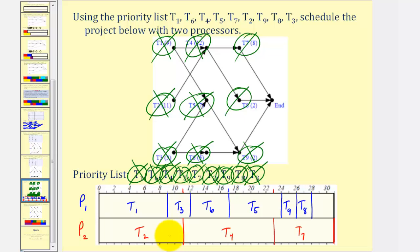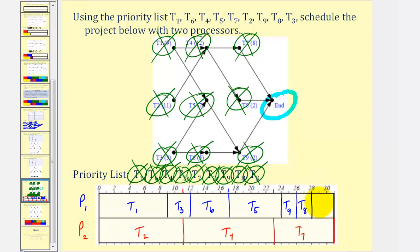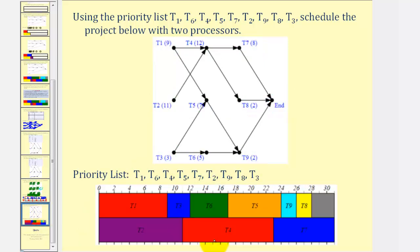Now that all the tasks have been assigned, the schedule is complete. After 28 hours, task eight becomes complete, and after 31 hours, task seven is complete and the project has ended. Looking at our schedule, the total project time with two processors is 31 hours, and processor one is idle for the last three hours. Here's the same schedule in color — processor one, processor two, and the idle time.